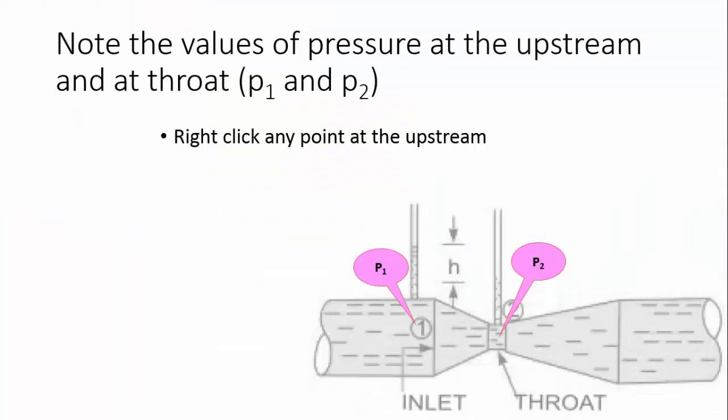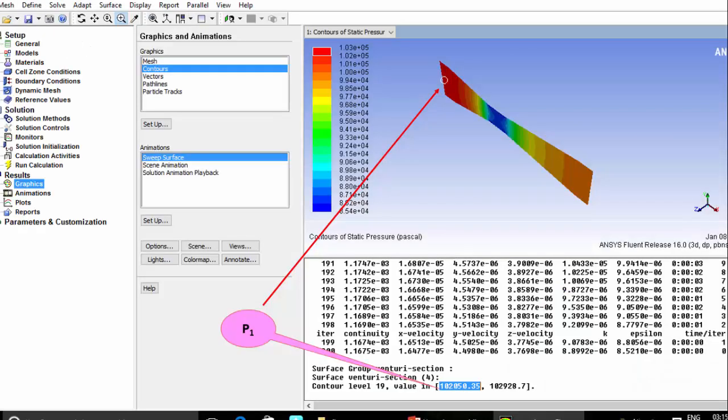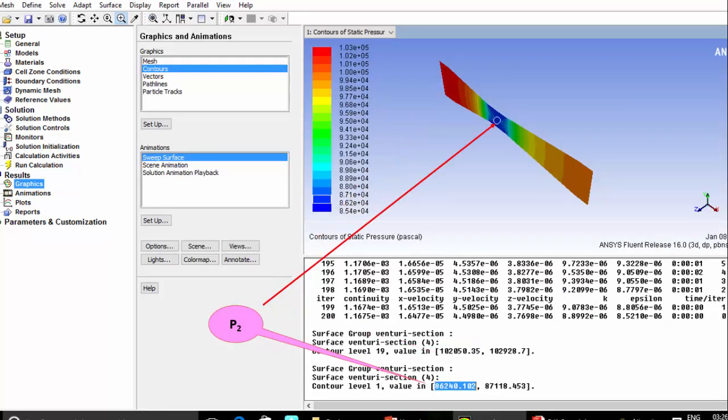Now, this is the time to measure the pressure difference between the inlet and throat sections of the VentureMeter and convert the pressure values to mass flow rate. Right click at any point near the inlet to measure the inlet pressure. Similarly, right click at any point near the throat to measure the pressure at the throat.